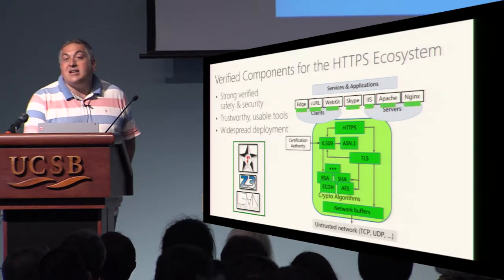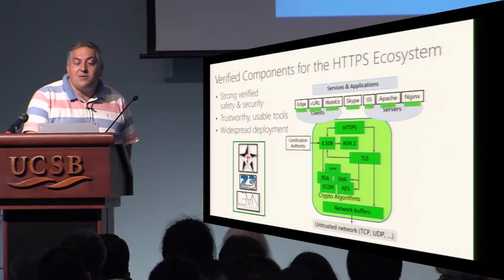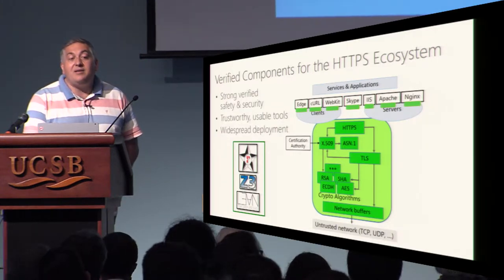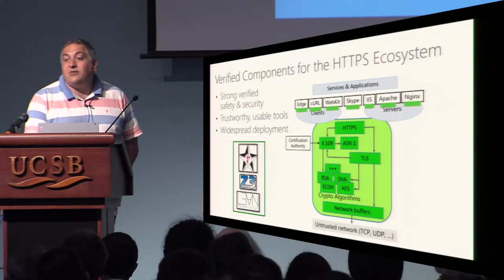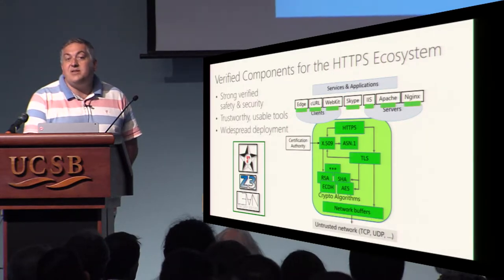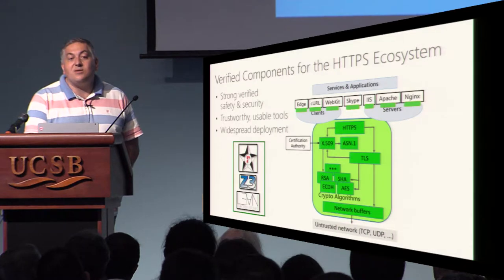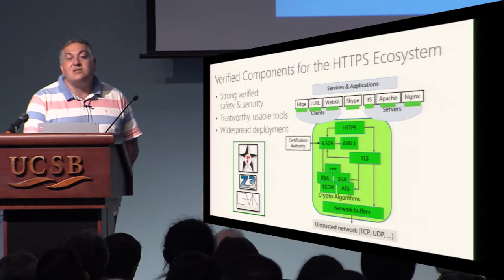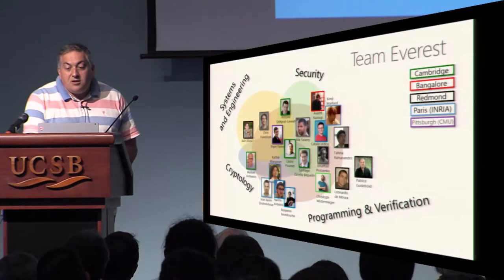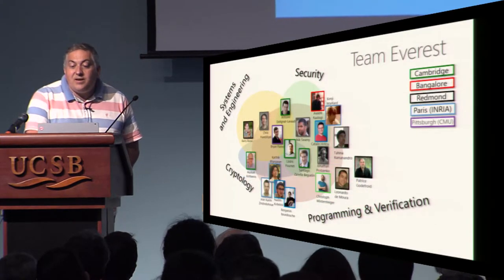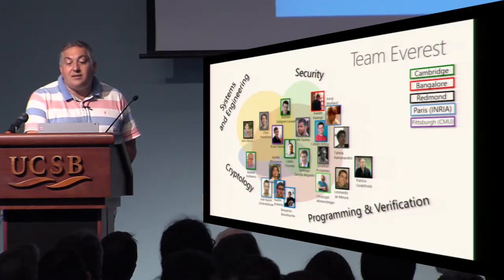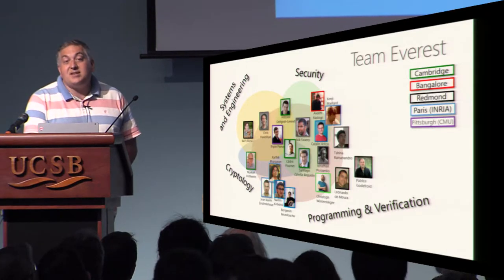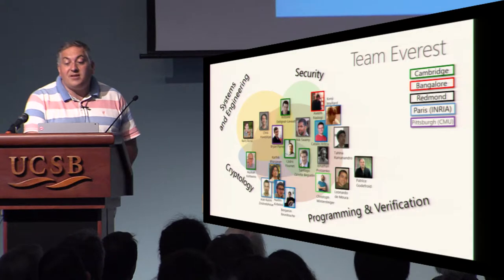In contrast to some work building reference implementations, we would like our components to be usable — formally verified, but also reasonably engineered, not too demanding in terms of resources, and reasonably fast so they constitute a reasonable alternative, not just something formally verified. We have a composite team involving essentially four labs: three at Microsoft Research and one at INRIA in Paris, with a mix of system security, cryptography, and programming and verification.